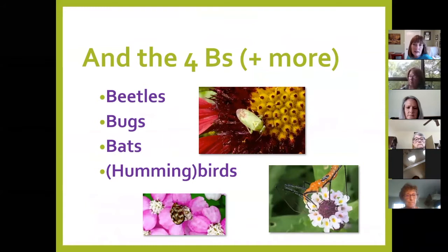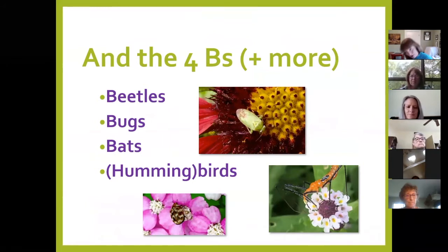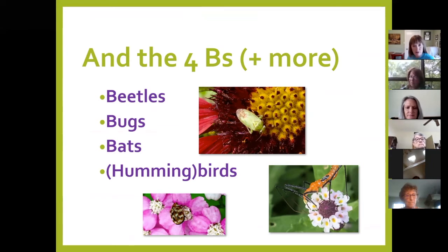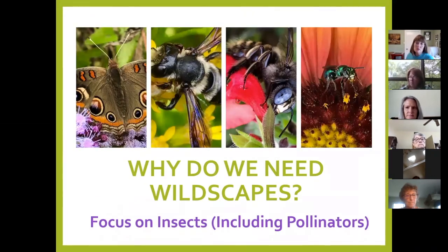I like to teach the four B's: beetles, bugs, bats, and hummingbirds. Basically, any animal that takes pollen from the male component to the female while it feeds — those are our pollinators.